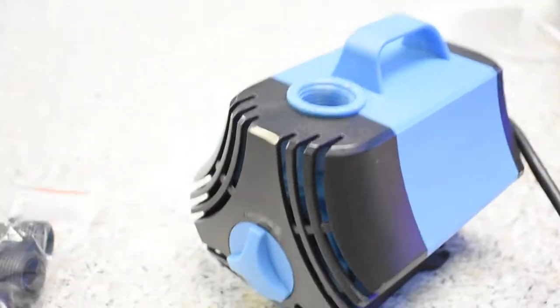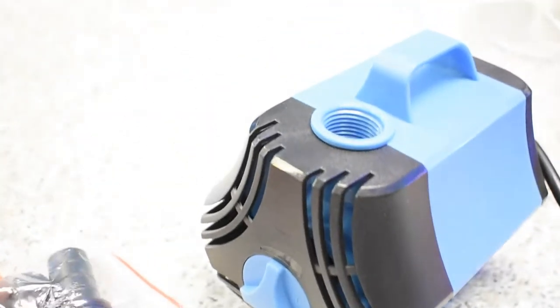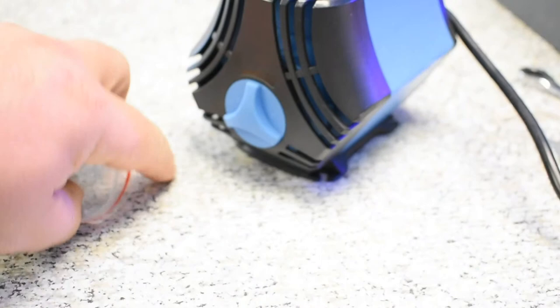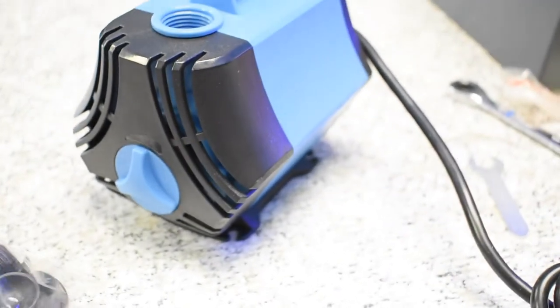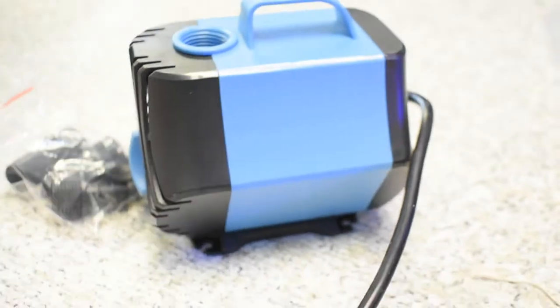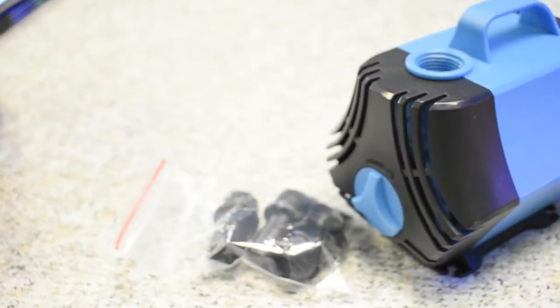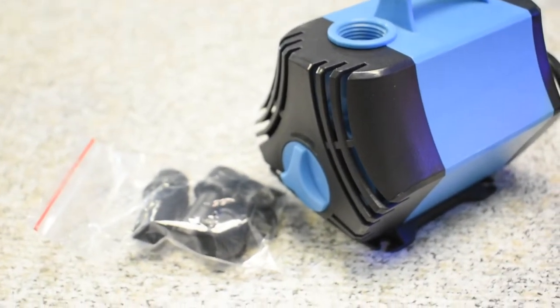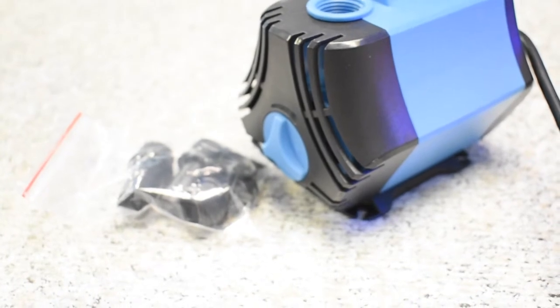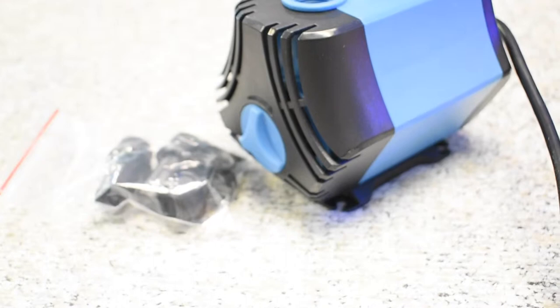Our tube for the return line is approximately 8 to 9 feet long, so there's a little bit of head pressure on this pump. Realistically, I'm expecting somewhere around 600 gallons per hour, so that should put us at about 1,200 total per hour. Depending on your setup and what your goals are for your livestock, you want to shoot for anywhere from five to ten times turnover of your system volume.